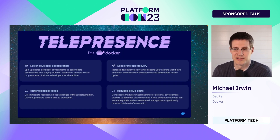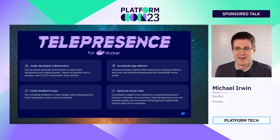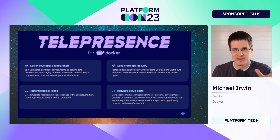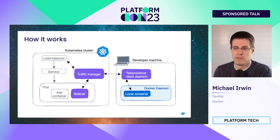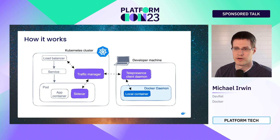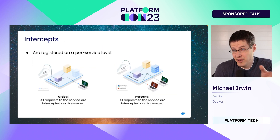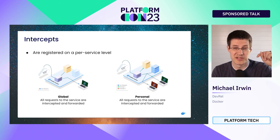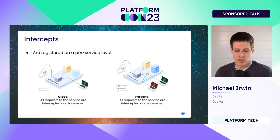That's where tools like Telepresence come in. Docker recently announced our Telepresence for Docker partnership with Ambassador Labs to help out in this space — easy collaboration, faster feedback loops, accelerate app delivery, and reduce your cloud costs. How it works: there's a traffic manager running in the cluster that can be configured to intercept requests to a specific service. It goes through a Telepresence daemon and lands at a local container on your local machine. There are two types of intercepts: a global intercept where all requests to a service get intercepted and sent to your machine, and a personal intercept where only specific requests with an HTTP header are forwarded to your machine.